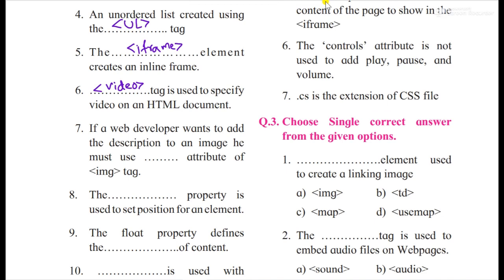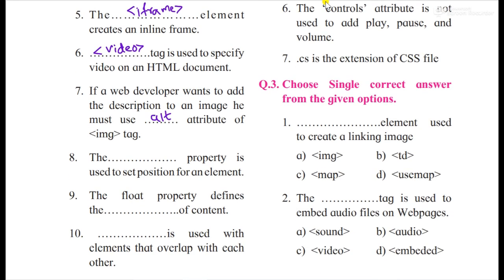In the previous videos, in the video lectures, I explained that description to an image that we use is alt attribute. Alt attribute should be used for defining an image while if it is not loading properly due to slow net speed or some other issue. If the image is not loading, then the alternative helps to recognize for the user what type of image or what the image is all about that is being displayed over here.